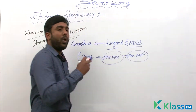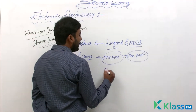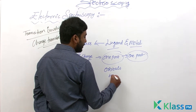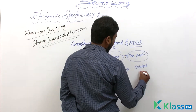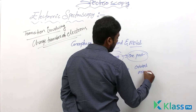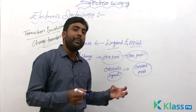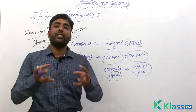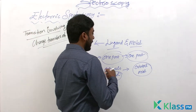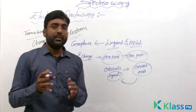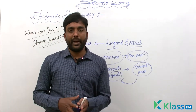The transition occurs between an orbital which is mainly ligand in character to an orbital which is mainly metallic in character. Or vice versa — the charge may also be transferred from the metal orbital to the ligand orbital.